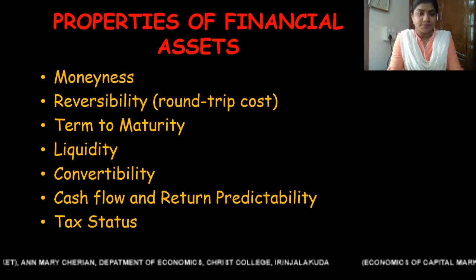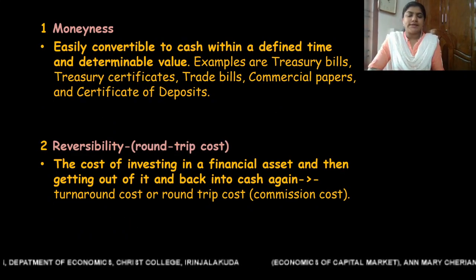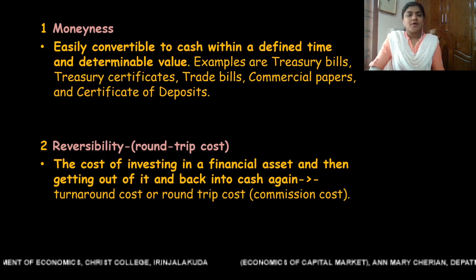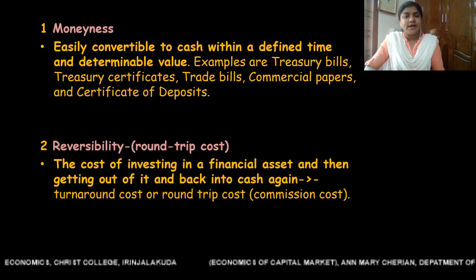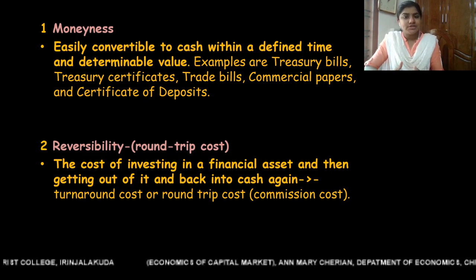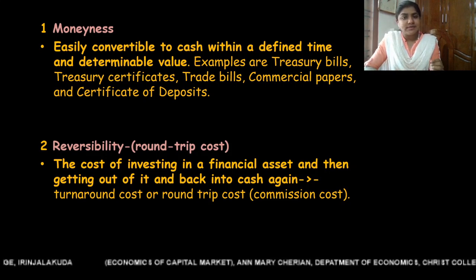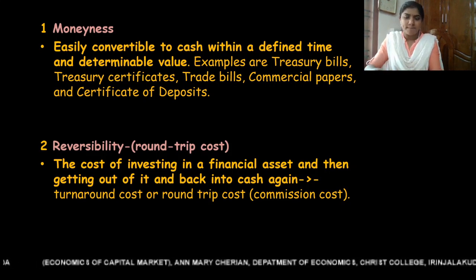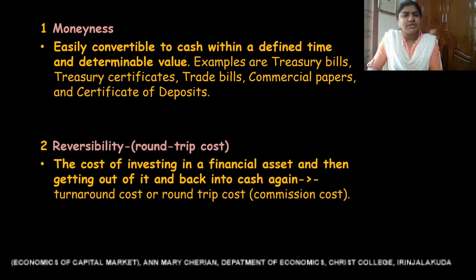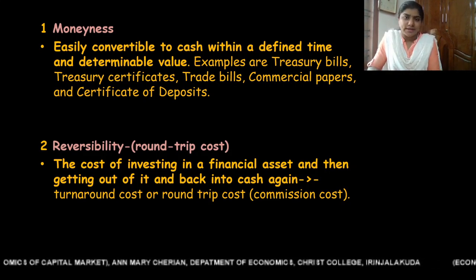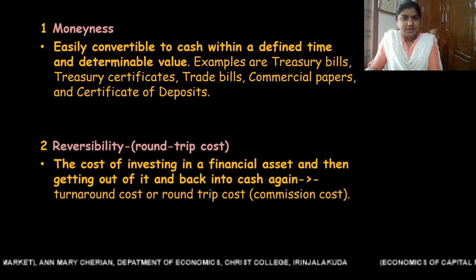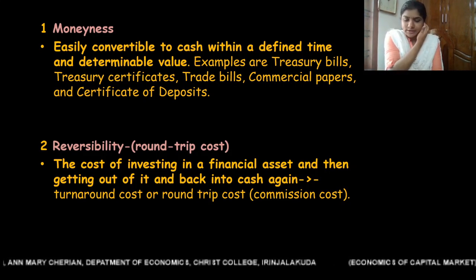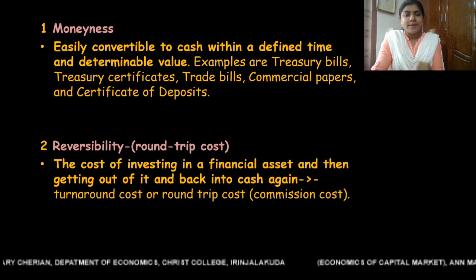The first property is moneyness. Moneyness implies that financial assets can be easily converted into cash within a defined time and at a determinable value. Financial assets can be converted into cash with little risk or delay, and this property of a financial asset is known as moneyness. These financial assets are considered as near money assets compared to other assets.